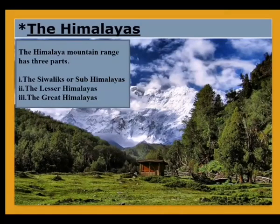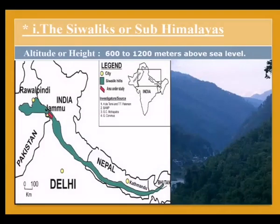The Himalaya mountain range has three parts: number one, the Sivaliks or Sub-Himalayas; number two, the Lesser Himalayas; and number three, the Great Himalayas. The southern range in Rawalpindi district is the Sivaliks or Sub-Himalayas.